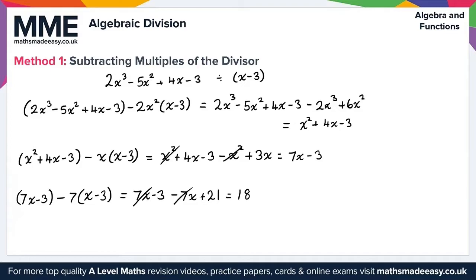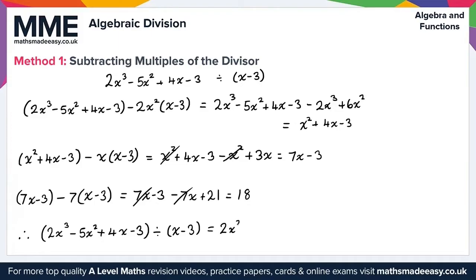In total, we have subtracted 2x squared plus x plus 7 lots of x minus 3, and there is 18 left over as the remainder. So 2x cubed minus 5x squared plus 4x minus 3 divided by x minus 3 gives us 2x squared plus x plus 7 with a remainder of 18. That gives us everything we need for method 1.